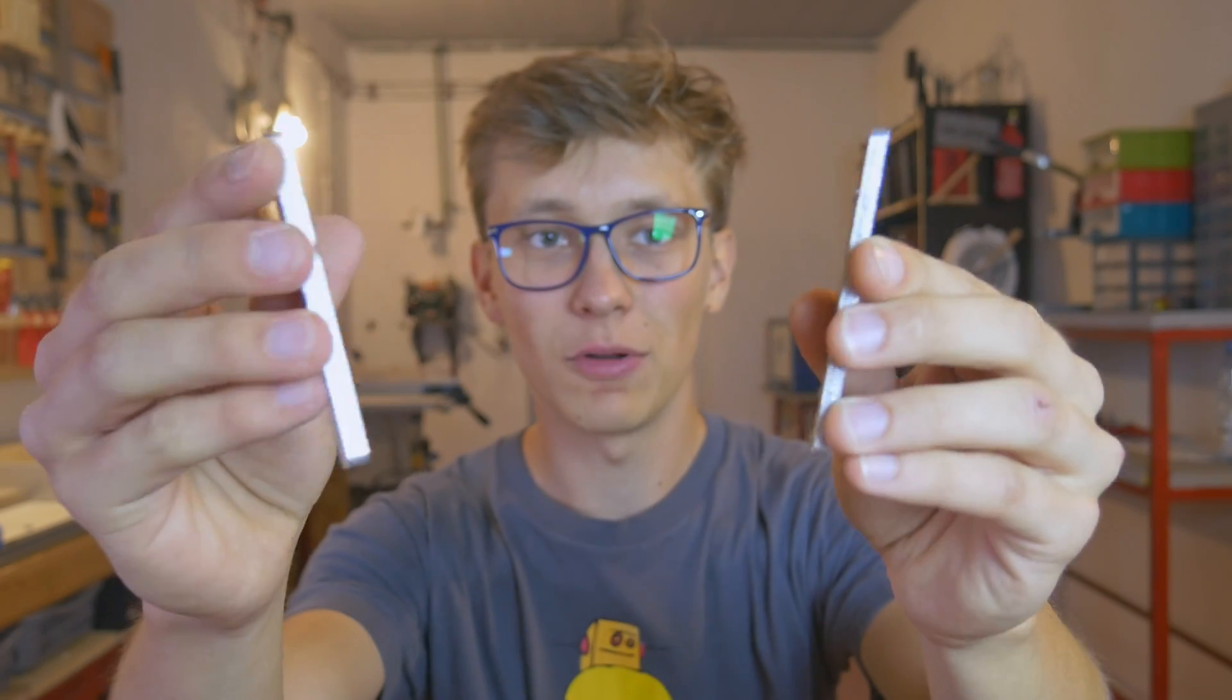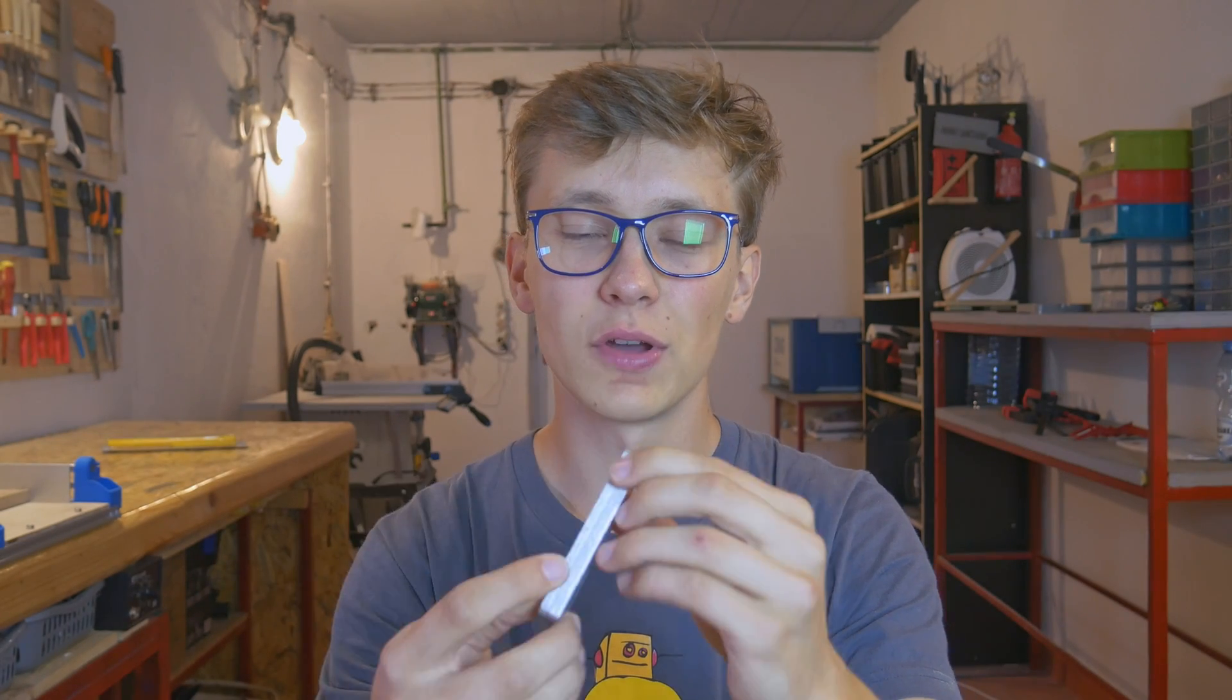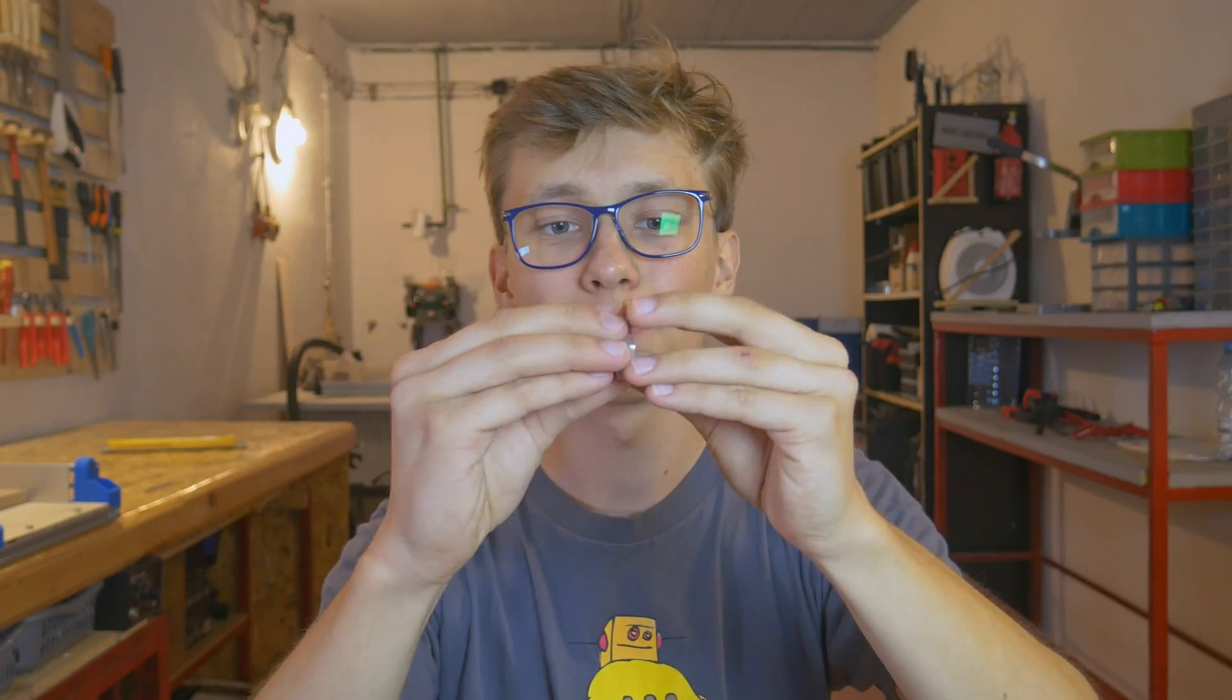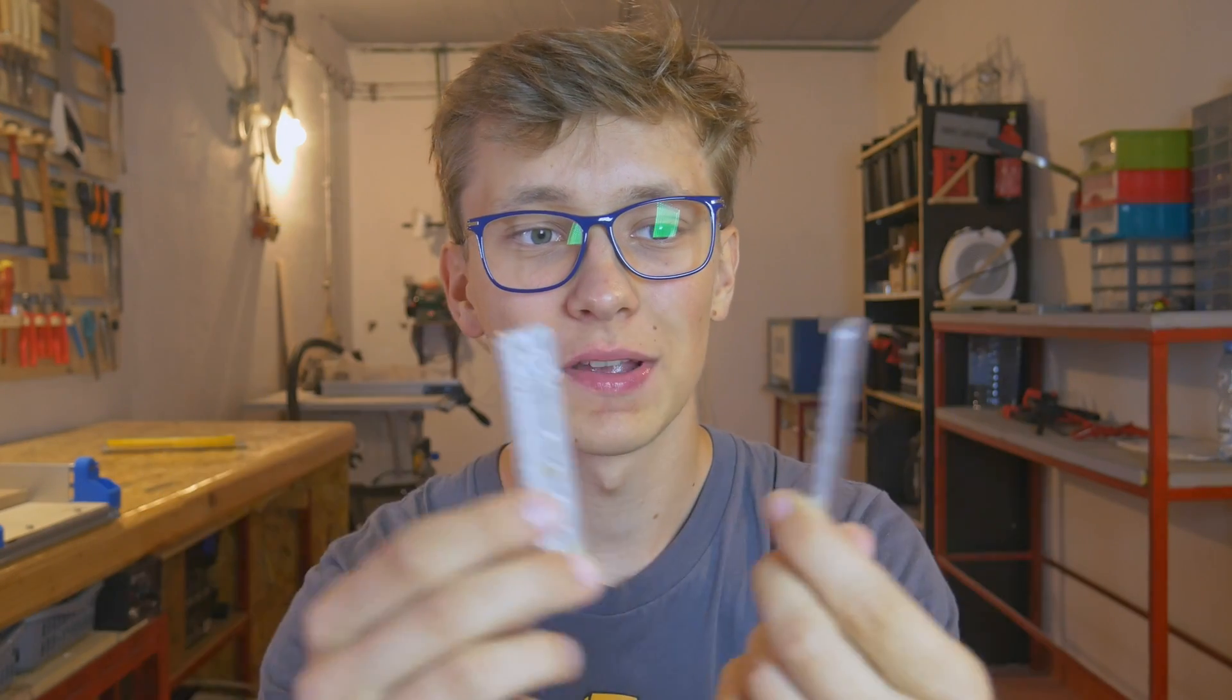Before we get into machining new molds on the Dremel CNC, let's actually try the old mold. Here I have the zip tie mold, and if you saw the previous video about DIY injection molding, you know that it didn't work out with the old hot glue gun. But because I have a new one, I want to try again and hopefully we'll get some working zip ties. In my previous video we successfully made the washer mold, but I really want to see this zip tie mold working.